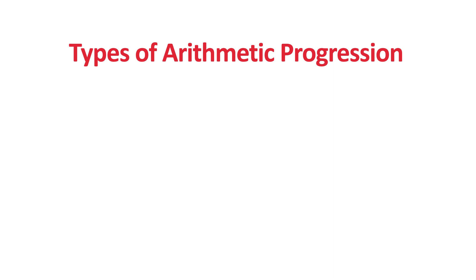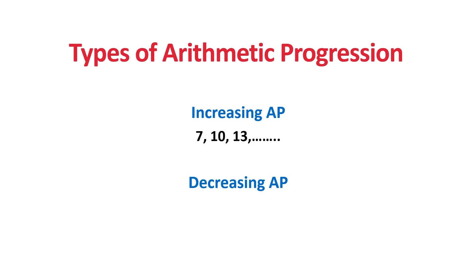Next, let us discuss the types of Arithmetic Progression. They are classified into two: Increasing Arithmetic Progression and Decreasing Arithmetic Progression. First, let us see what is an Increasing AP. These numbers are in Increasing Arithmetic Progression because they are in ascending order. 7 plus 3 is 10, 10 plus 3 is 13, and so on. So here, the common difference is 3.